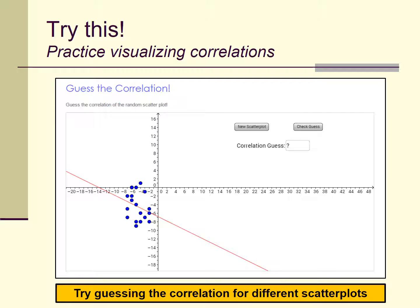At this point it's fun to play a game to visualize correlations. There are several web apps available — if you search for 'guess the correlation' you'll find them. These apps give you randomly generated scatter plots and ask you to guess the correlation value, then check your answer. It's a good way to connect numerical calculations of correlation to geometric representations of what the data actually looks like.